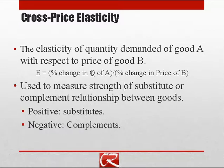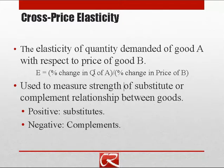If cross price elasticity is positive, it means when the price of good B goes up, people buy more of good A — they substitute away from B toward A. If the goods are complements, the cross price elasticity should be negative: when the price of B goes up, the quantity demanded of A goes down. For example, when the price of gasoline goes up, the quantity demanded of tires goes down because people drive less and buy fewer tires. This may sound obscure, but actual important legal questions get settled based on this.